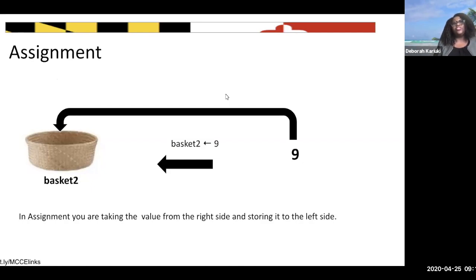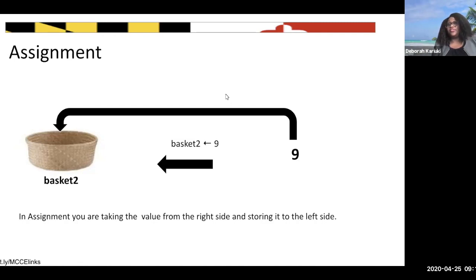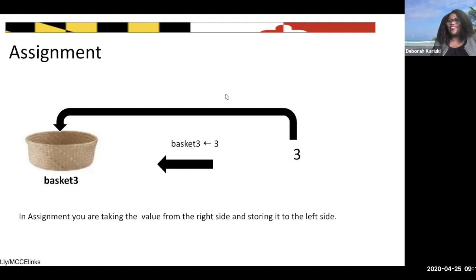Here's another example - still the same thing. Now we have nine and we are taking nine and putting it in basket two. The reason I have basket one and basket two is because if I took the nine and put it in basket one, whatever was in basket one will be overwritten, because it's memory space. If we save something on top, it will be overwritten. And then basket three has a three. Is that clear so far?